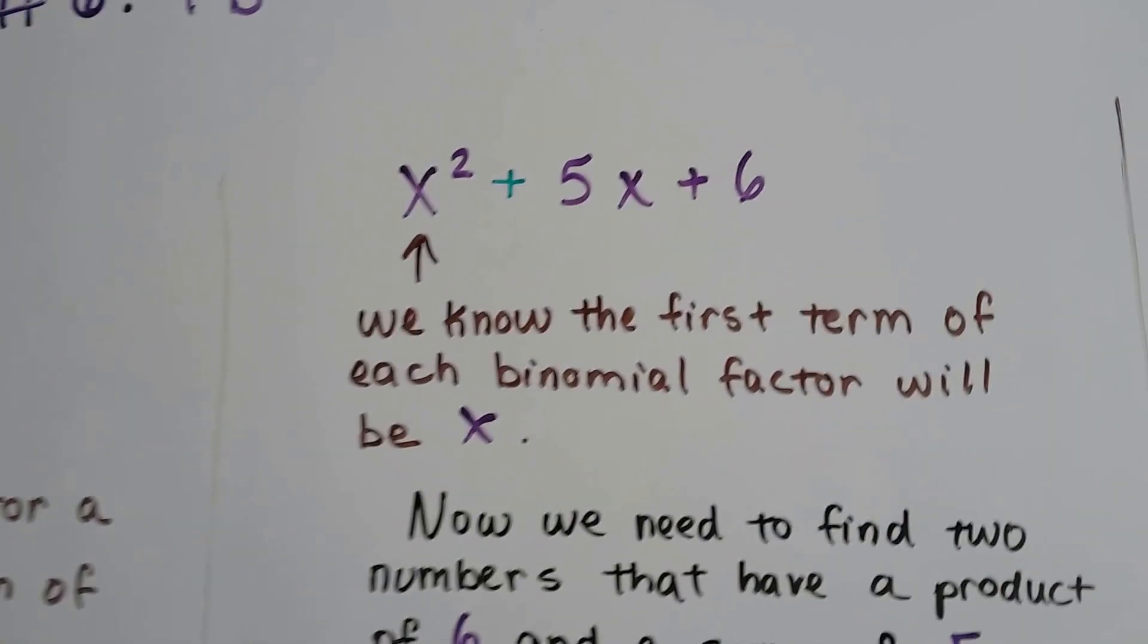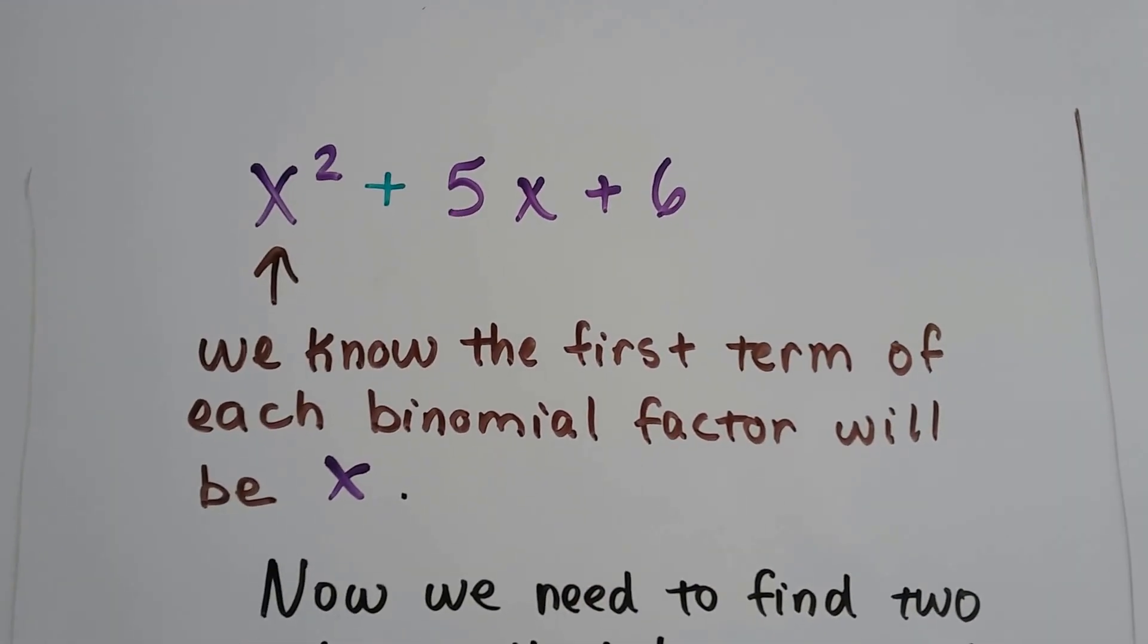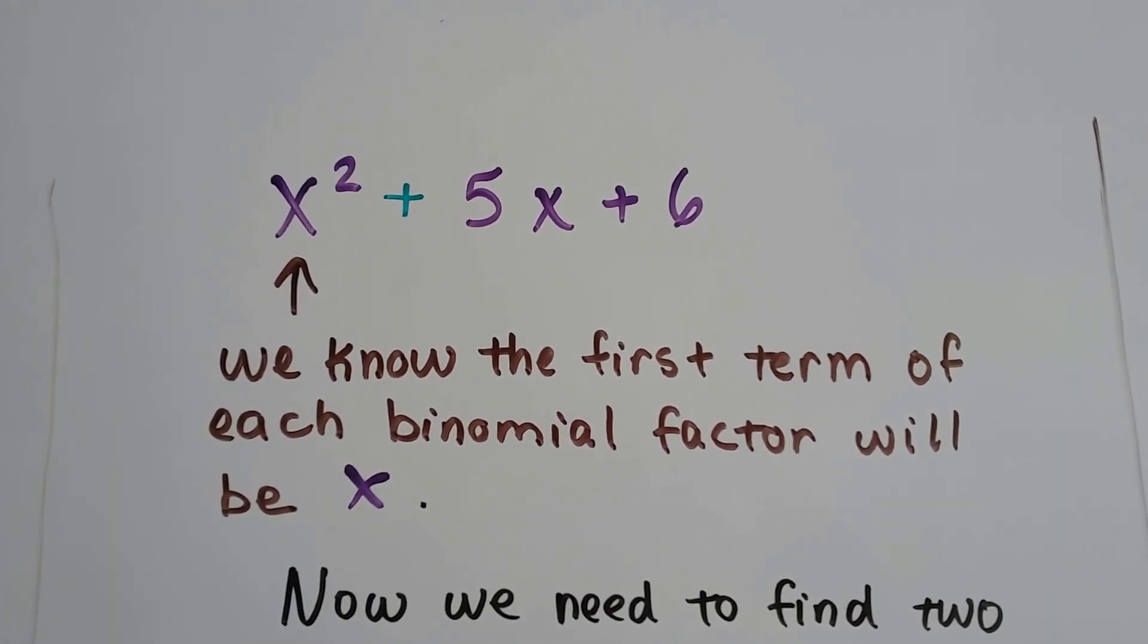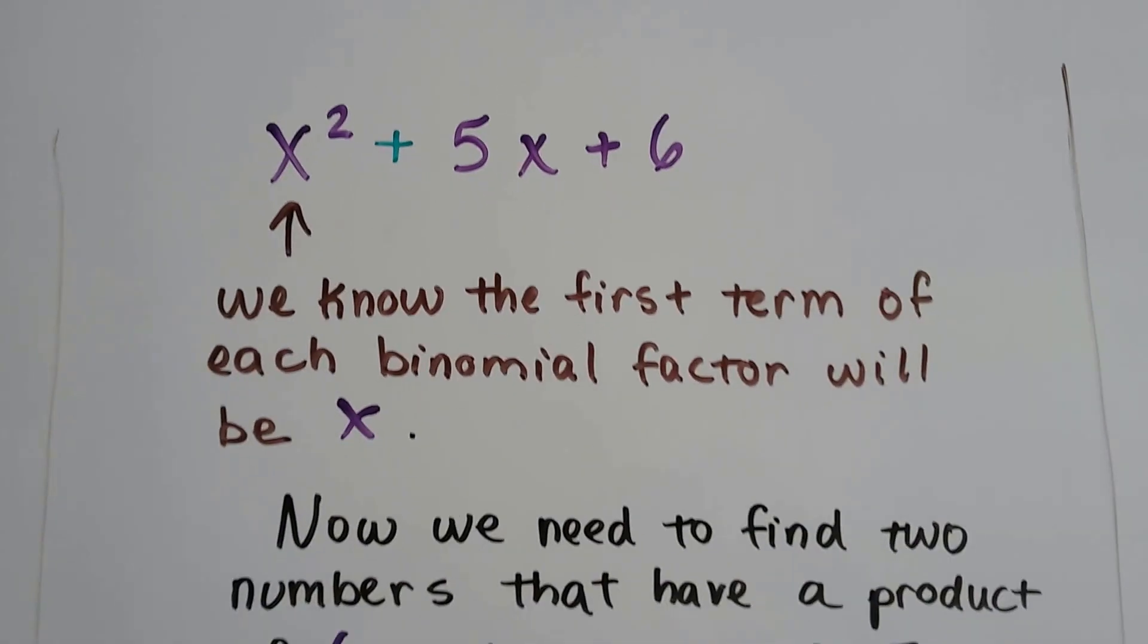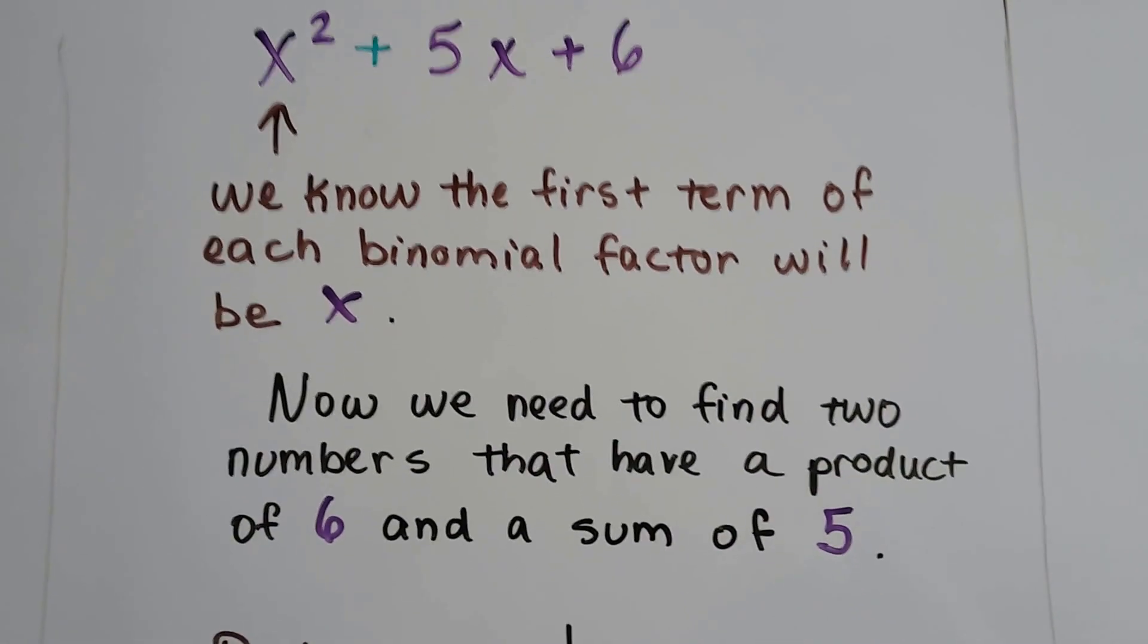So let's look at x² + 5x + 6. We know the first term of each binomial factor will be an x because of the x². So we can start writing our parentheses and put an x in the front.